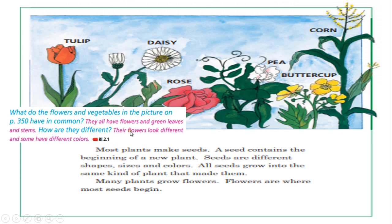How are they different? Look over here — they all have different colors. This one is red, white, reddish, pinkish. Another one is white, and this one is yellow. So they are different in size and in colors.